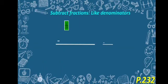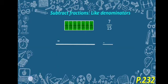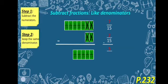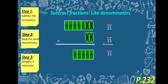Next question: 7 over 15 minus 2 over 15. Let's follow our steps. Let's cross it, and this is what we have left. Step 1: subtract the numerators — 7 minus 2 equals 5. Step 2: keep the same denominator — we don't subtract the denominator, so we just put 15. Step 3: simplify if necessary. 5 and 15 both can be divided by 5: 5 divided by 5 equals 1, and 15 divided by 5 equals 3. So 5 over 15 simplifies to 1 over 3.